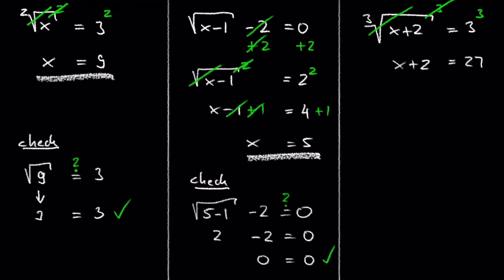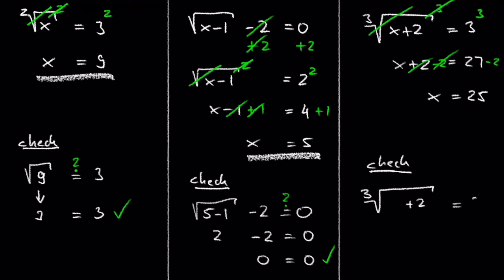Subtracting 2 on each side of the equation gives us x equals 25. Checking our answer by substituting 25 for x in the original radical equation gives us the third root of 27, which is 3. So we solved the problem properly.